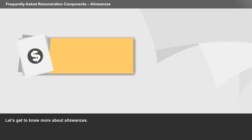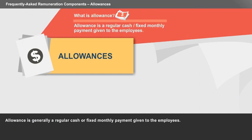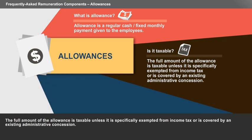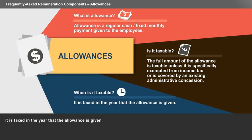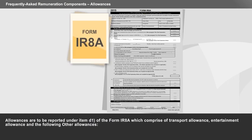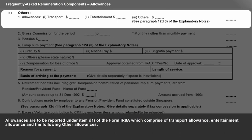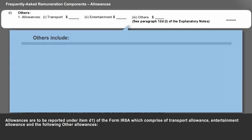Let's get to know more about allowances. Allowance is generally a regular cash or fixed monthly payment given to employees. The full amount of allowance is taxable unless it is specifically exempted from income tax or is covered by an existing administrative concession. It is taxed in the year that the allowance is given. Allowances are to be reported under Item D1 of the Form IR8A, which comprises Transport Allowance, Entertainment Allowance, and other allowances.